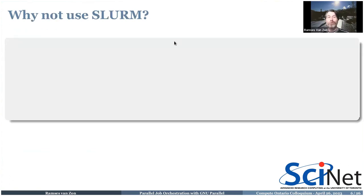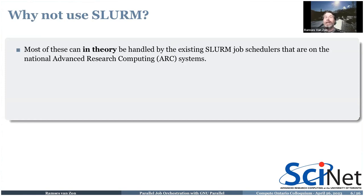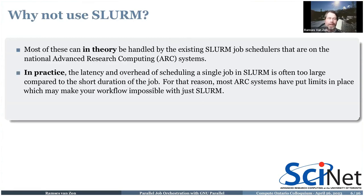One solution to most of these challenges would be to use the scheduler we already have: SLURM. SLURM is a job scheduler that can launch jobs, let you ask for specific resources, put in dependencies, and even stage data in and out. In theory this should be a talk about SLURM — how to submit tens of thousands of jobs and keep track of them. In practice, however, SLURM is so versatile that it takes a while to schedule jobs.